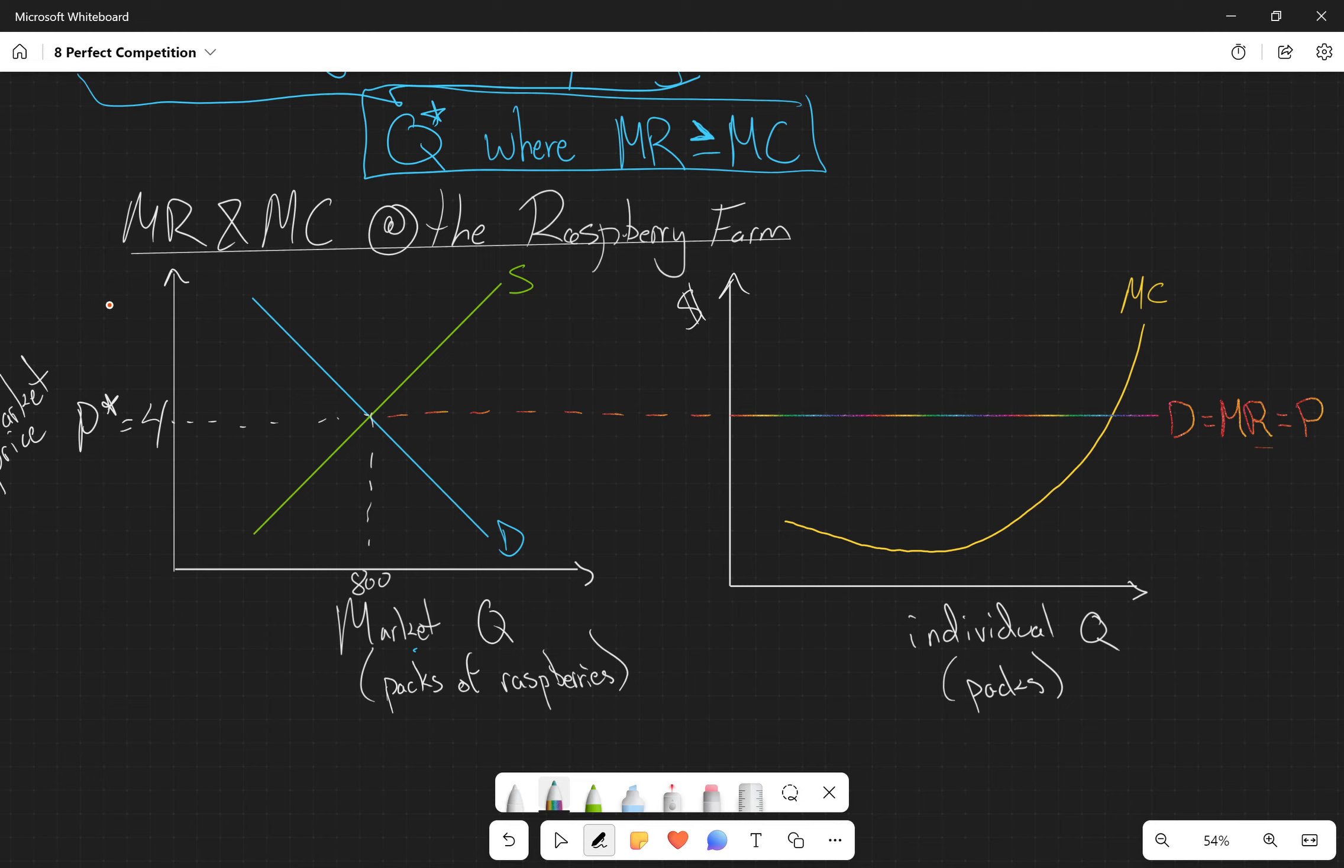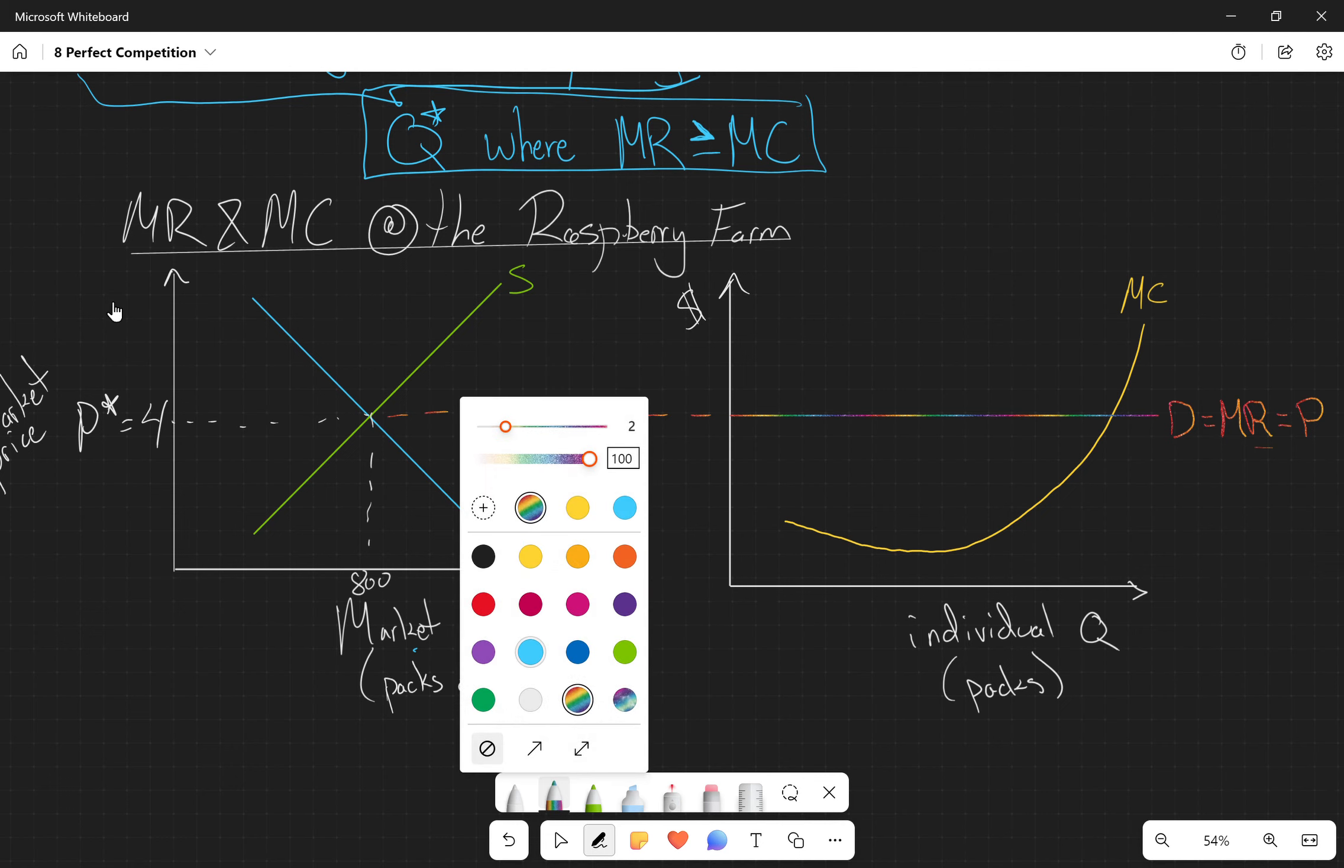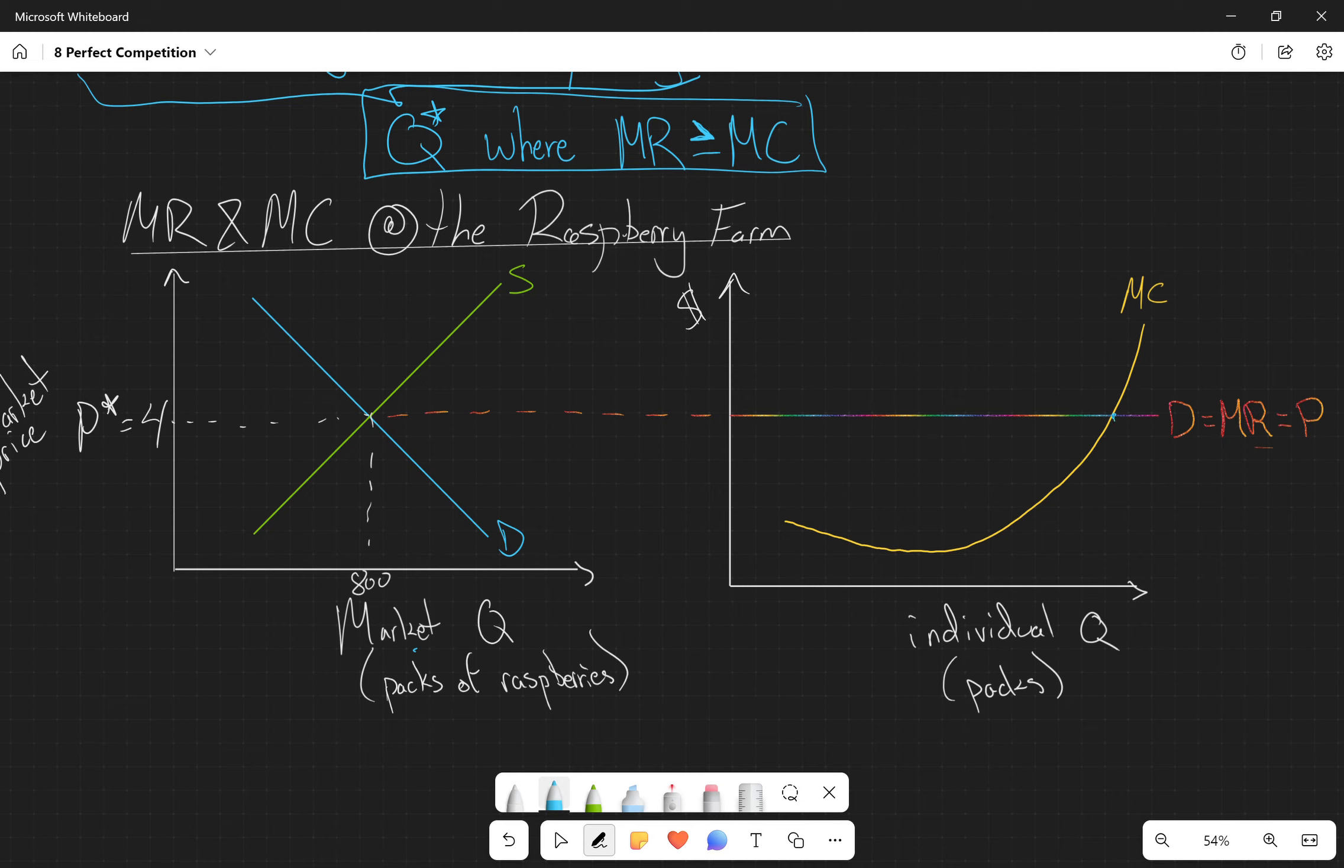Now we're going to apply our optimal rule. Q star is where the marginal revenue is equal to the marginal cost. We're going to find where these two equal, we're going to drop this down, and we're going to label this Q star. For this particular one for the individual producer, it's 80.